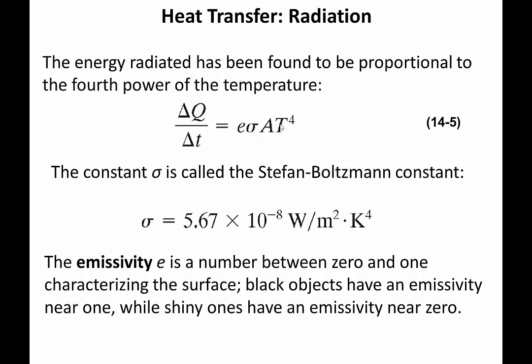The new things are this E and this constant sigma. This is the Stefan-Boltzmann constant. It's just a number that gives you the right units and the right number at the end. This E is important. This is emissivity. This has to do with how well you absorb or emit light and absorb thermal energy.